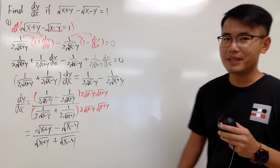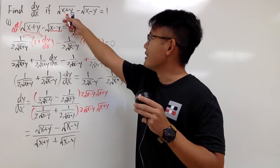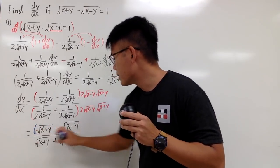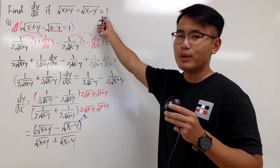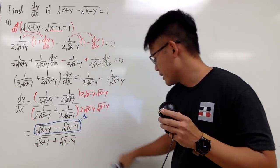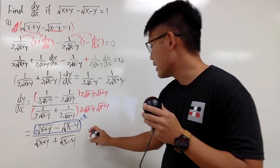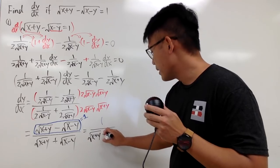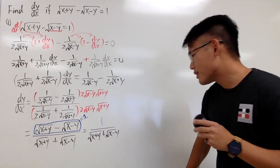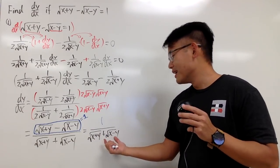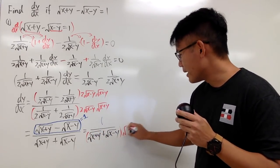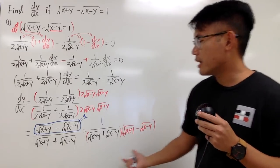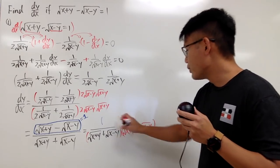We can make this even nicer. We notice that the numerator, square root of (x plus y) minus square root of (x minus y), is nicely equal to 1 by the original equation. So we can take advantage of that and write it as 1 over square root of (x plus y) plus square root of (x minus y). But we're not done yet — if we multiply by the conjugate, we can simplify further. So I will multiply top and bottom by square root of (x plus y) minus square root of (x minus y).